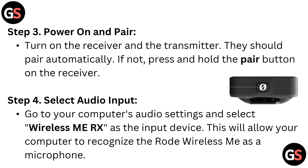Step 3: Power on and pair. Turn on the receiver and transmitter — they should pair automatically. If not, press and hold the pair button on the receiver.